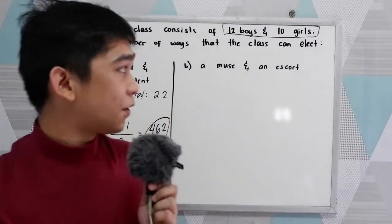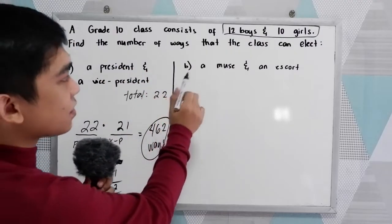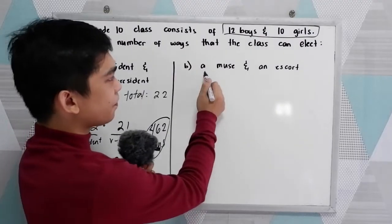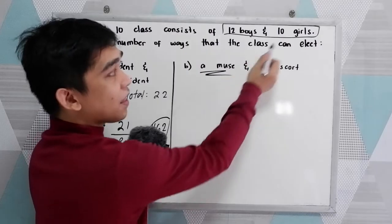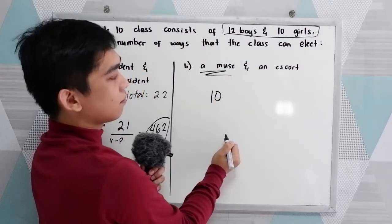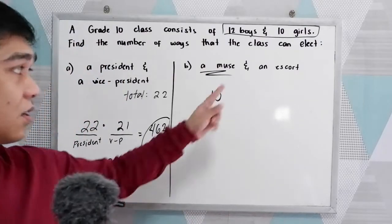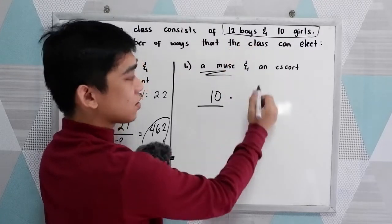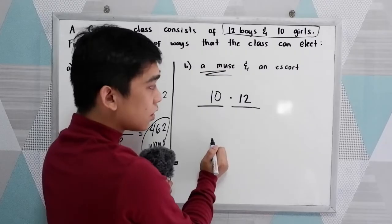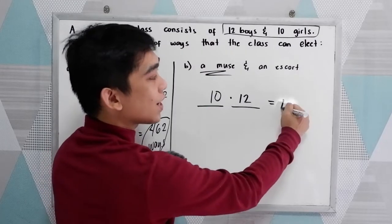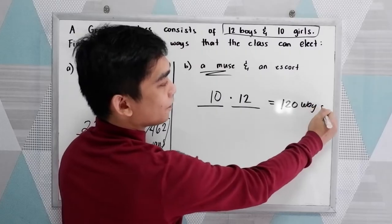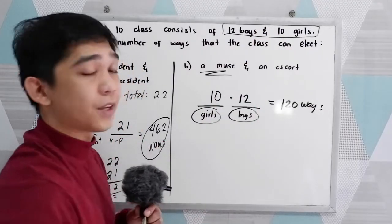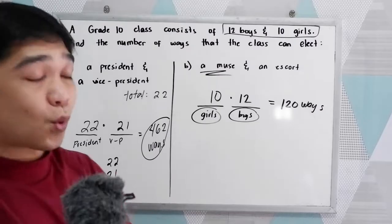Next, letter B — find the number of ways the class can elect a muse and an escort. For the muse, we have 10 girls, so all the girls can run as muse. For the escort, the boys can run, and there are 12 boys. So 10 times 12 equals 120. There are 120 possible ways.